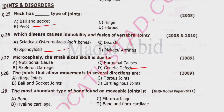Correct option for Question 28 is beta — ball and socket joints. Question 29: The most abundant type of cartilage found on movable joints is hyaline cartilage, fibrocartilage, or bone and fibrocartilage. Correct option is beta — hyaline cartilage.